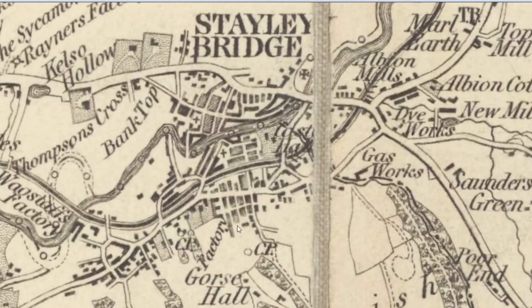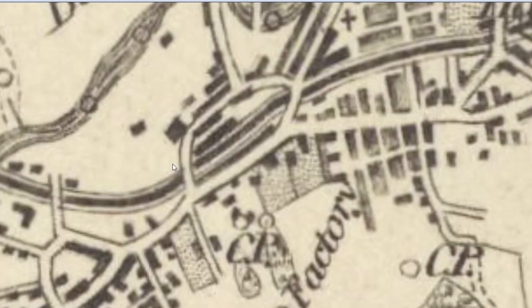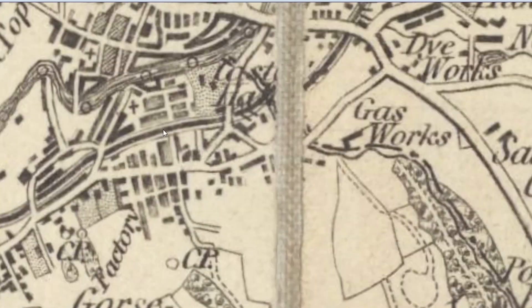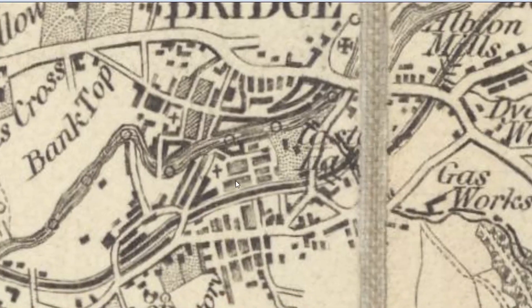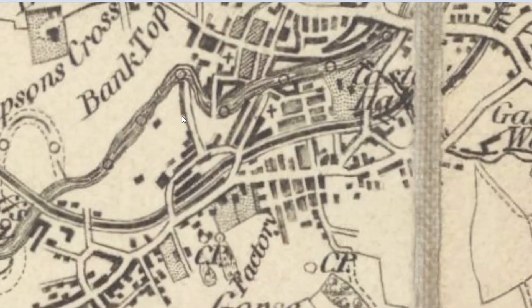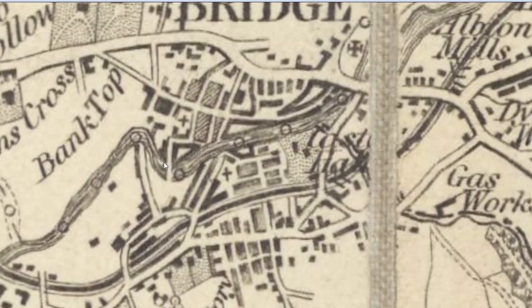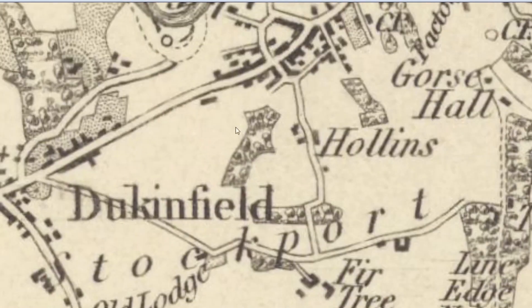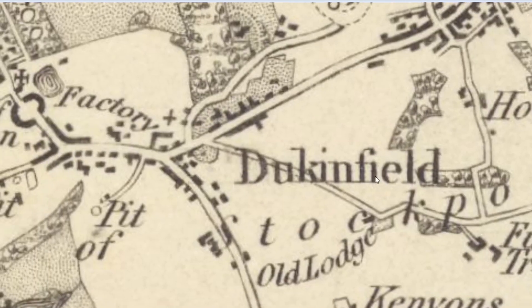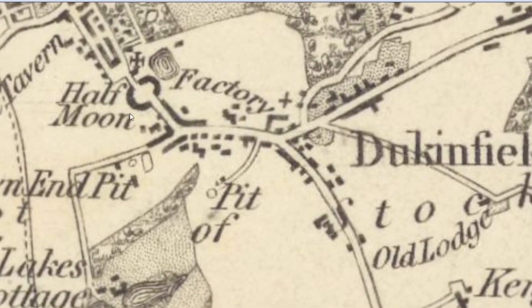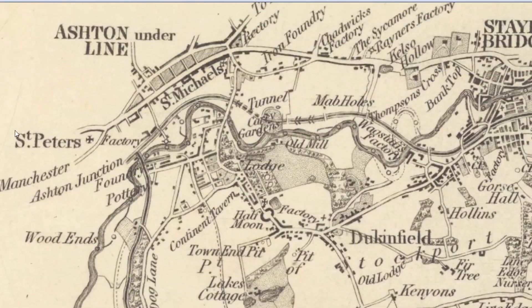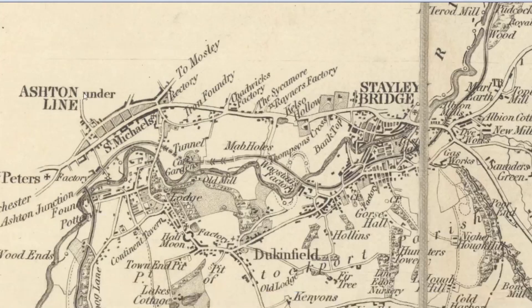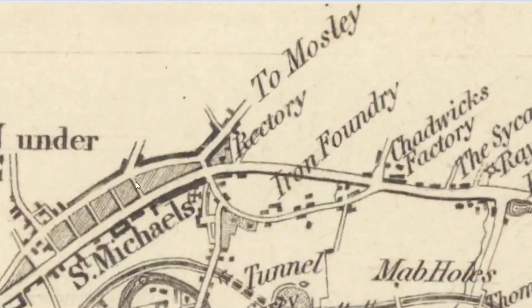Stalybridge — looks like quite a big town. Let's have a zoom in. We've got the canal going through the middle of the town in the 1830s — no railway going through the town yet, I guess, but there's also a river. We've got a church here, the little cross. We've got another church here, a factory, Duck and Field — or Duke and Field — Half Moon pub, St. Peter's, Ashton and the Line. No IKEA yet, I'm afraid. To Mossley — look, another church there.